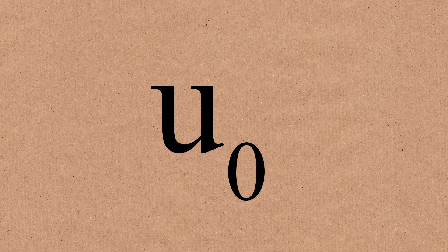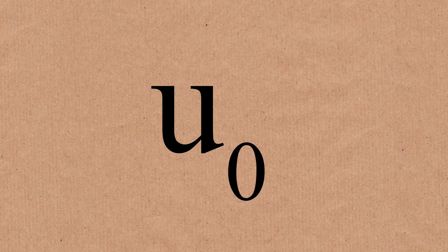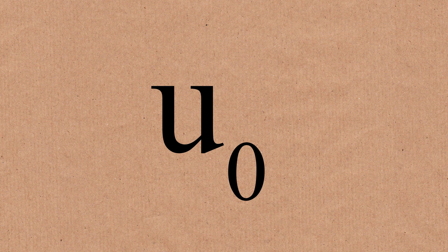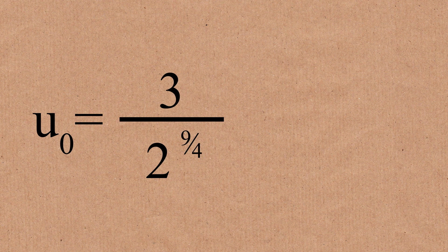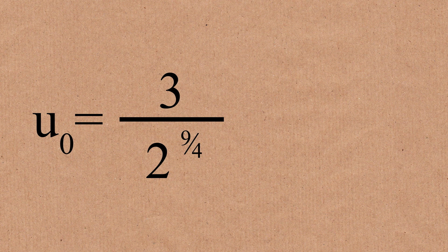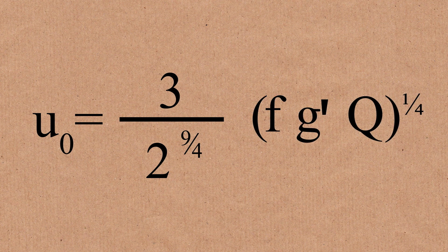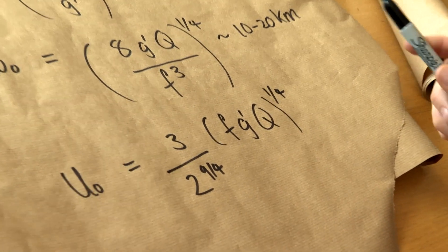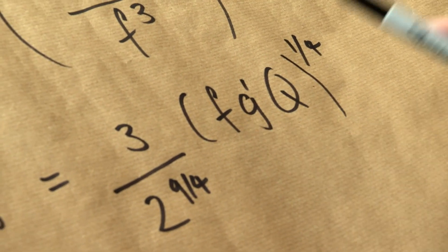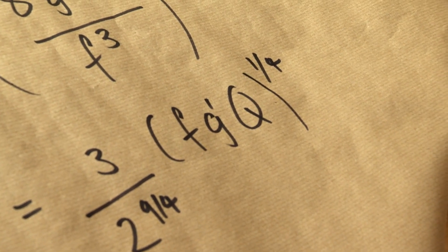And then our final result, we can get the velocity. So the velocity is going to follow a similar pattern, except the numbers this time are ridiculous. So we have 3 over 2 to the 9 quarters, maybe my favorite number, F G prime Q to the 1 quarter. Again, let's just think about, does this make sense? We go faster if the Earth rotates faster, if our experiment rotates faster. Okay, yeah, that seems sensible.